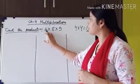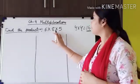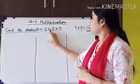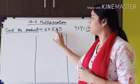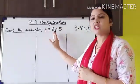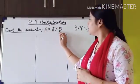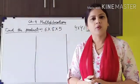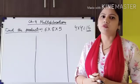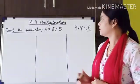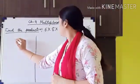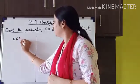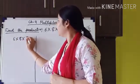Here I have written 6 multiplied by 8 multiplied by 5. After multiplying this, I will just change the order of the numbers — these numbers will be interchanged to find out the product. So first I am doing 6 multiplied by 8 multiplied by 5.